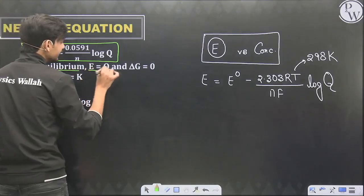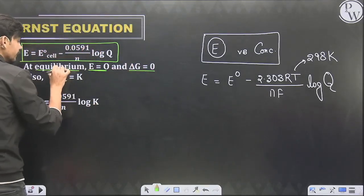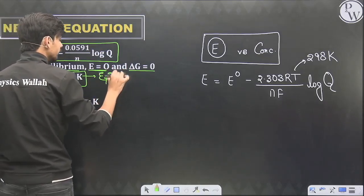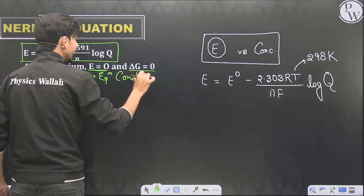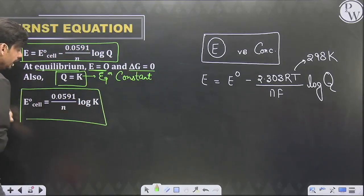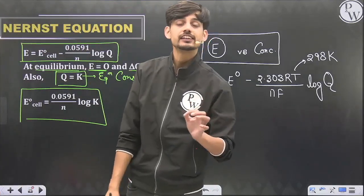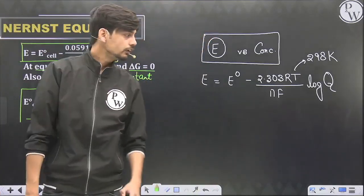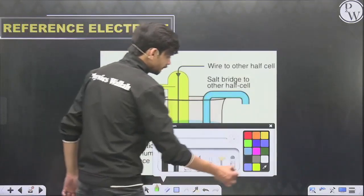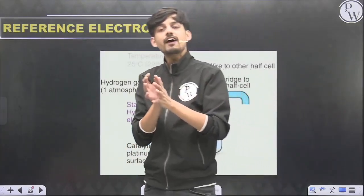At equilibrium, the cell gives no useful work, so E = 0 and the reaction quotient equals the equilibrium constant K. We get the relation: E°cell = (0.0591/n) log K. We use a reference cell (standard hydrogen electrode, SHE) because we can only find the potential difference between two terminals, not the potential of individual terminals. The SHE is assigned a standard potential of zero.